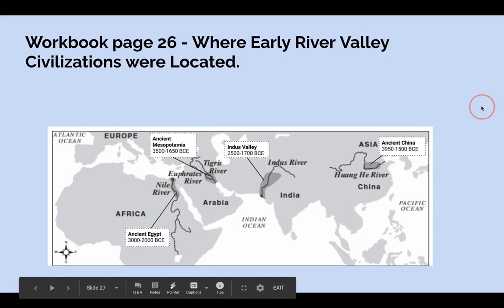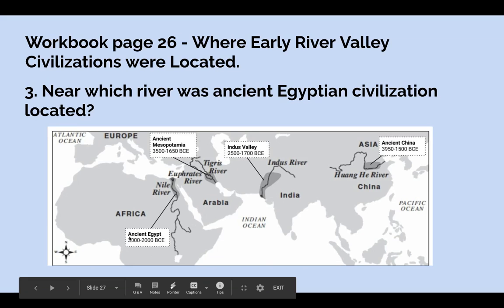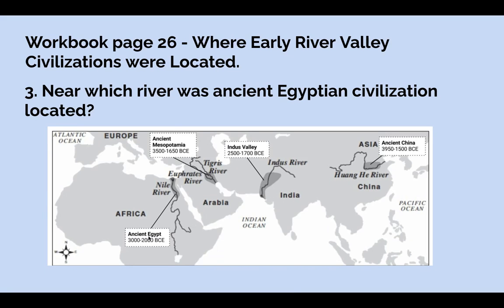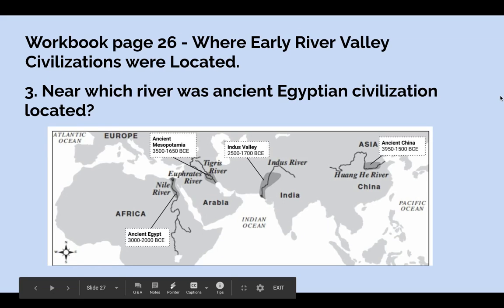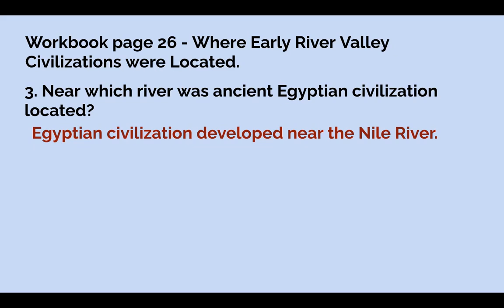Question three: near which river was ancient Egyptian civilization located? Here is ancient Egyptian civilization on the map. I hope you said the Nile River — Egyptian civilization was located near the Nile River. If you didn't, that's okay, change your answer. We learn by making mistakes.